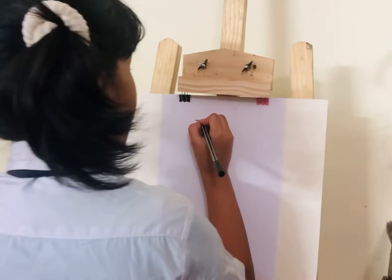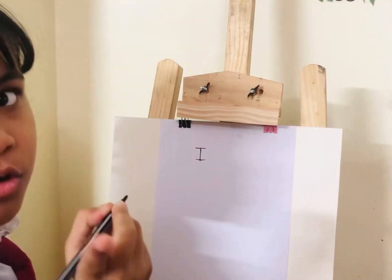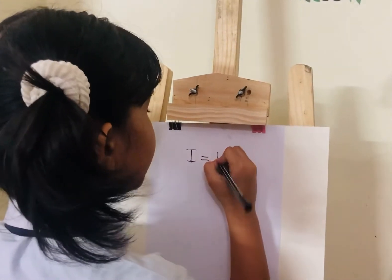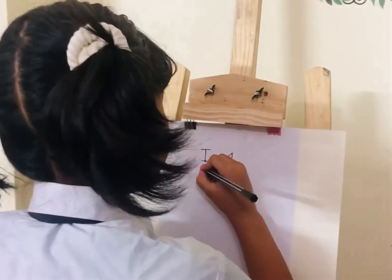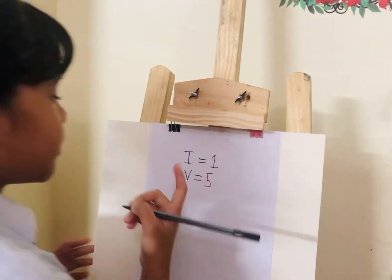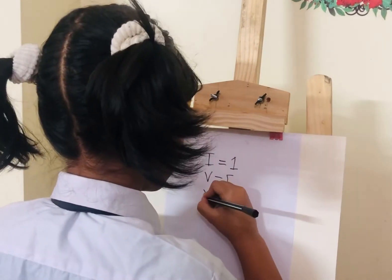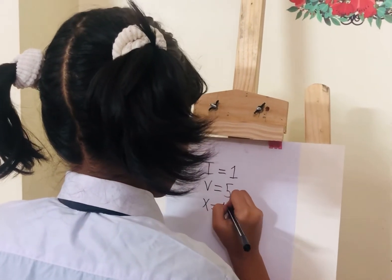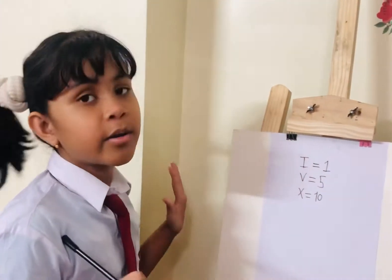Before starting my project, I am sharing a few points that you have to remember. I is equal to 1. Let me write it here. And then, V is equal to 5. And then, X is equal to 10. These are the numbers that you have to remember, because these are important.